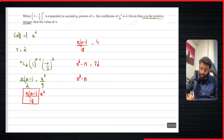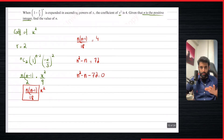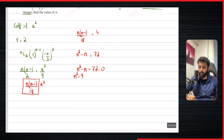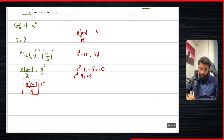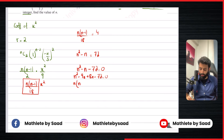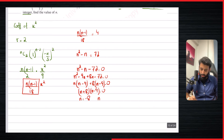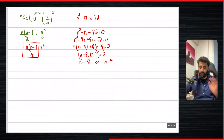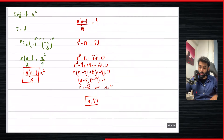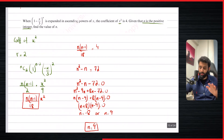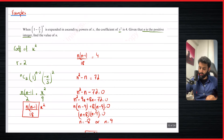Moving 72 over gives us N² − N − 72 = 0. This is a quadratic equation, so we do middle term breaking. The two numbers we need are −9 and 8, which multiply to −72 and add to −1. Factoring: N(N − 9) + 8(N − 9) = 0, giving (N + 8)(N − 9) = 0. The two values of N are −8 and 9. We settle for N = 9 because the question told us N is a positive integer, and thankfully it is.